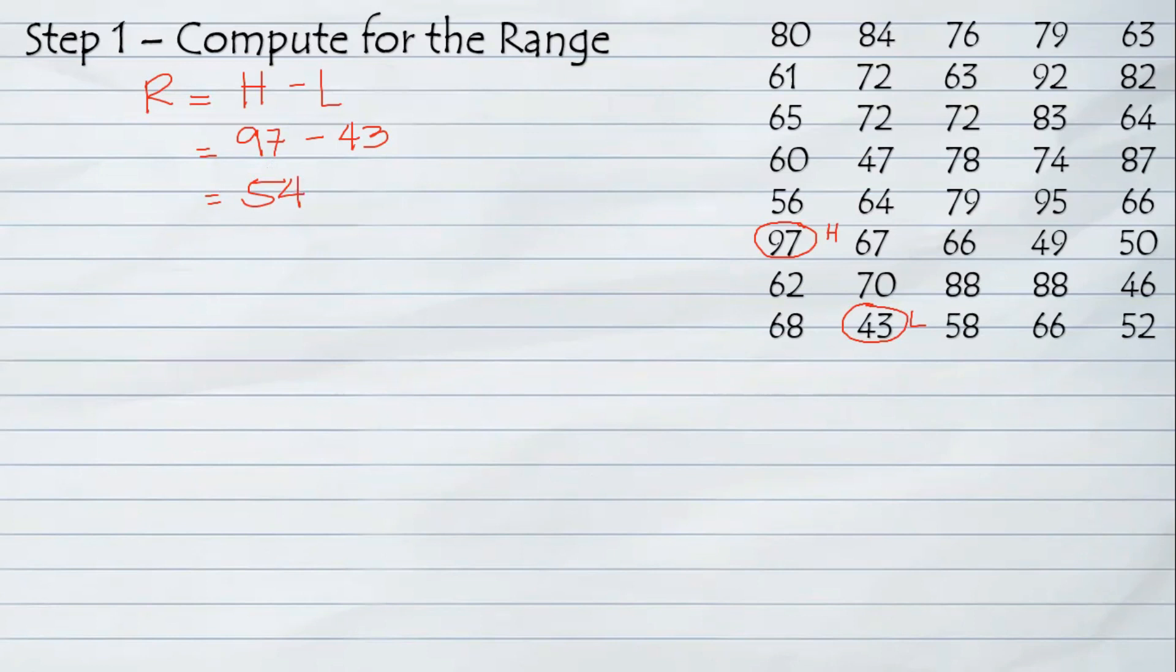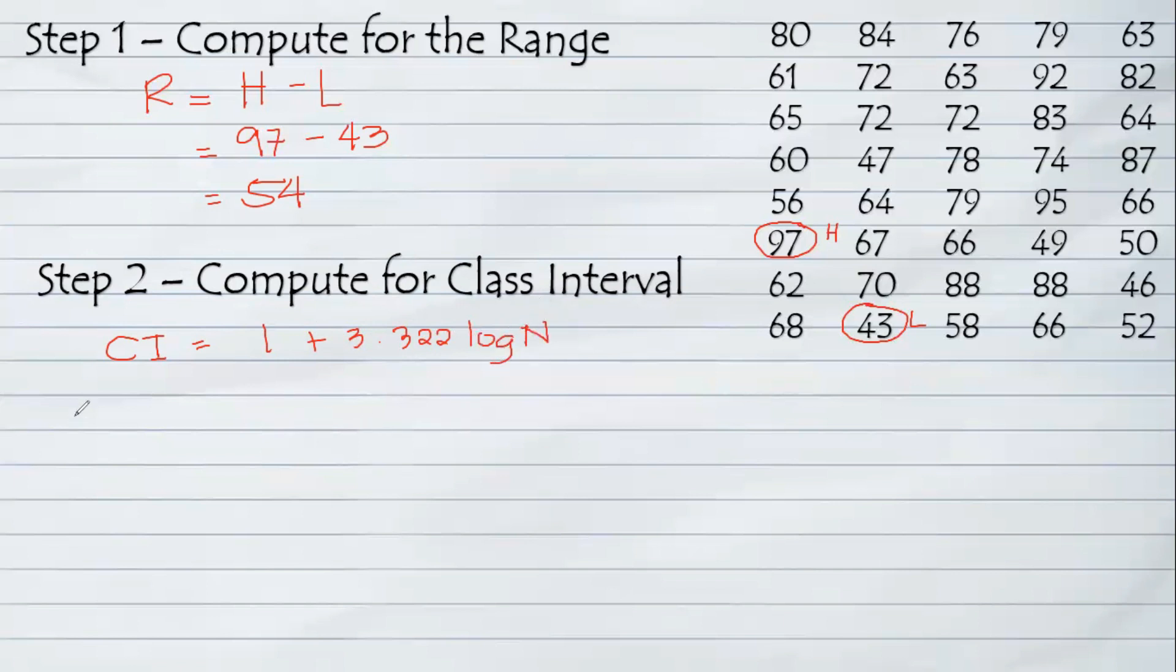Next step is to identify the class interval. How many columns will be creating in the frequency distribution table. To identify the class interval, all we need to do is use the formula 1 plus 3.322 log n, which this n stands for the total number of data. All you need to do is count. Based on our example, we have 40.